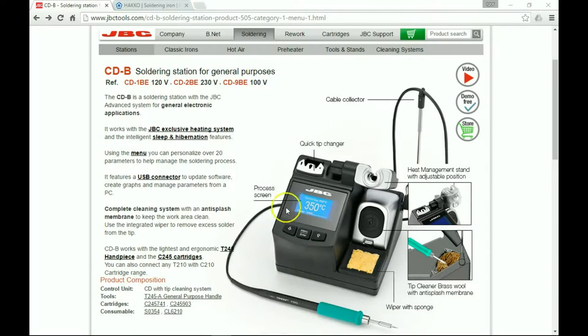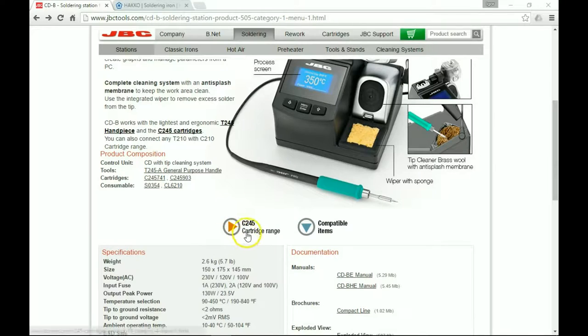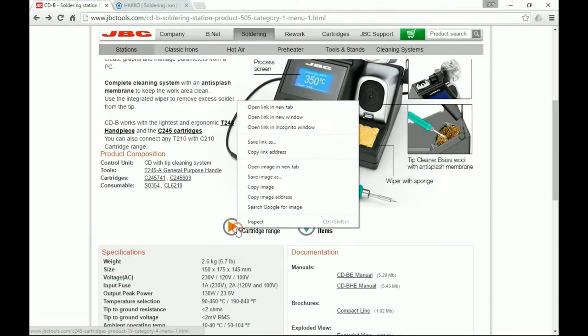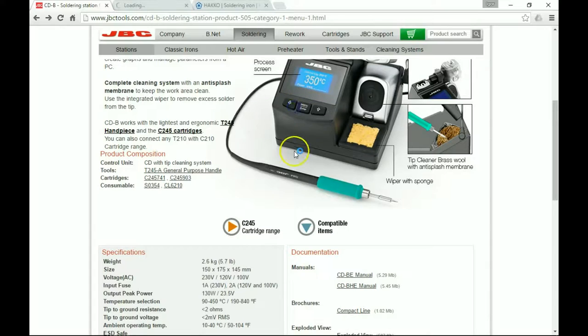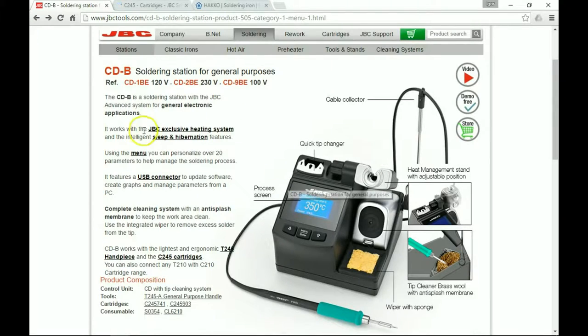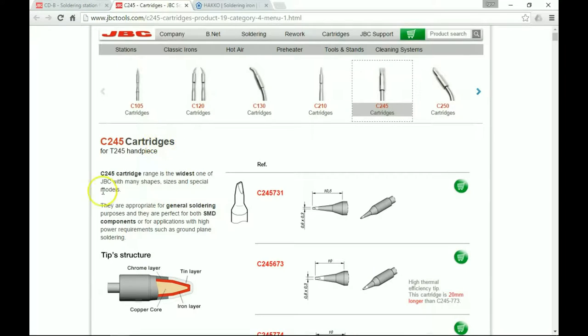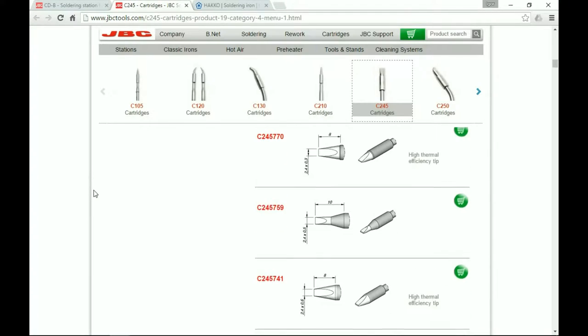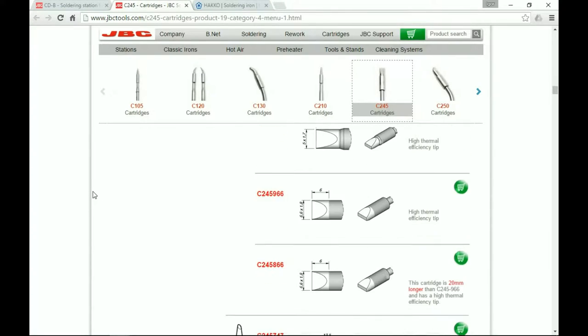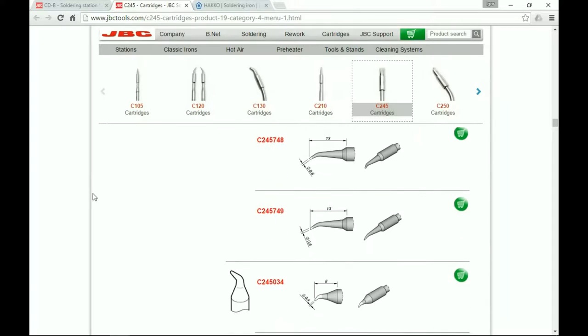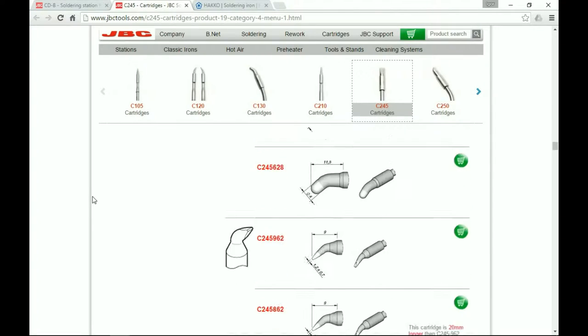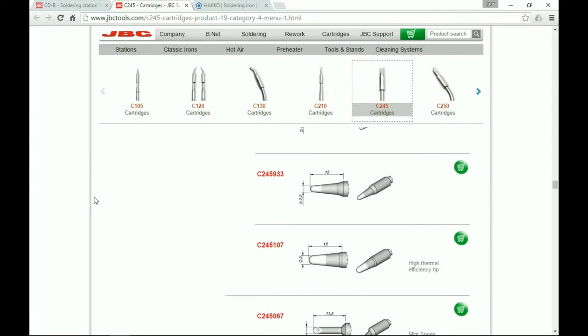The final thing that's amazing about this JBC soldering station is the very wide selection of tips. This takes the C245 cartridges. The station has every tip that you can possibly imagine—you can scroll this list for quite some time, lots and lots of different tips to do the specific tip.